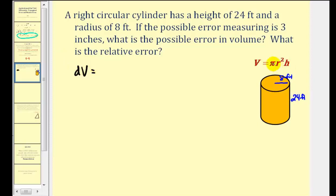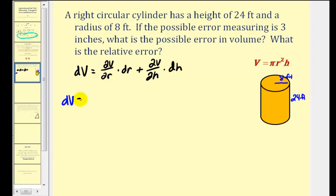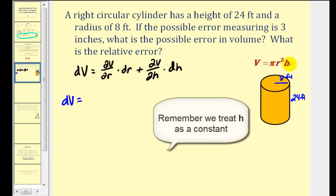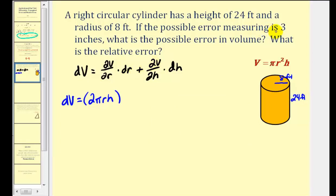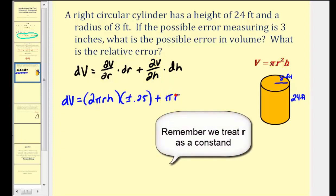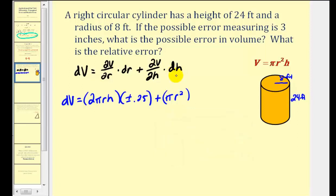Differential v is going to be equal to the partial derivative of v with respect to r times differential r, plus the partial derivative of v with respect to h times differential h. The partial of v with respect to r is going to be 2 pi r h, times differential r. Remember, measuring r can be off by up to three inches. These measurements are in terms of feet, so three inches converted to feet would be three twelfths, or one fourth of a foot — so differential r would be plus or minus 0.25. The partial derivative of v with respect to h gives us pi r squared, times differential h, which is also plus or minus 0.25 feet.